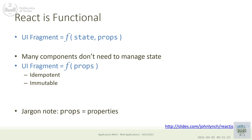In general, the content of a portion of the page only depends on two sets of information: state and properties. Props is a shortcut for properties. Properties are the inputs to the component — just like function arguments. In React we say the component receives a set of properties, which are just input parameters, and the component should render its own interface only by looking at the properties it receives.